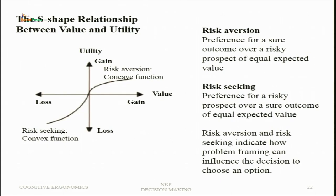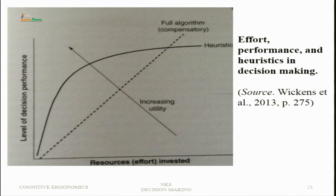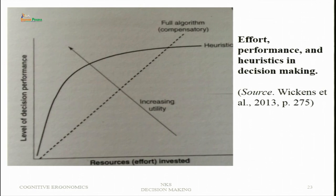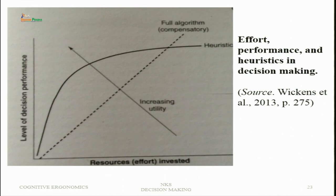Effort also influences performance in decision making. The level of decision performance increases as effort invested increases. Heuristics provide better results compared to the full algorithm (compensatory model) at lesser effort — at lower effort, heuristics provide higher performance as compared to the full algorithm. Therefore heuristics are useful in certain decision making processes as they reduce effort while maintaining good performance.